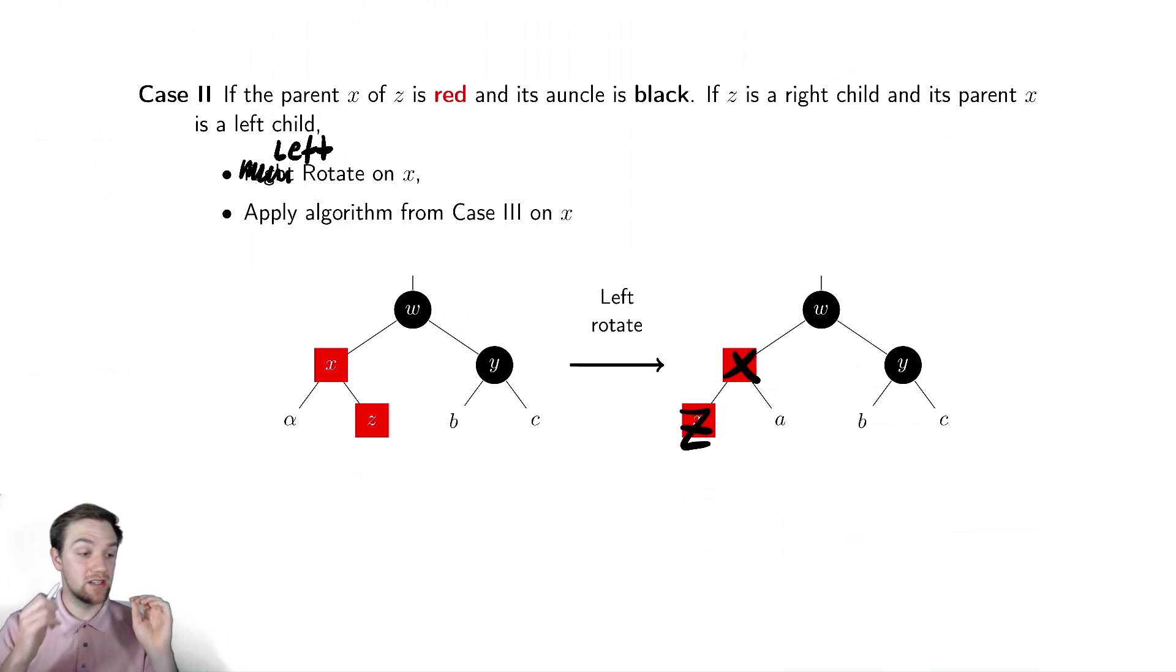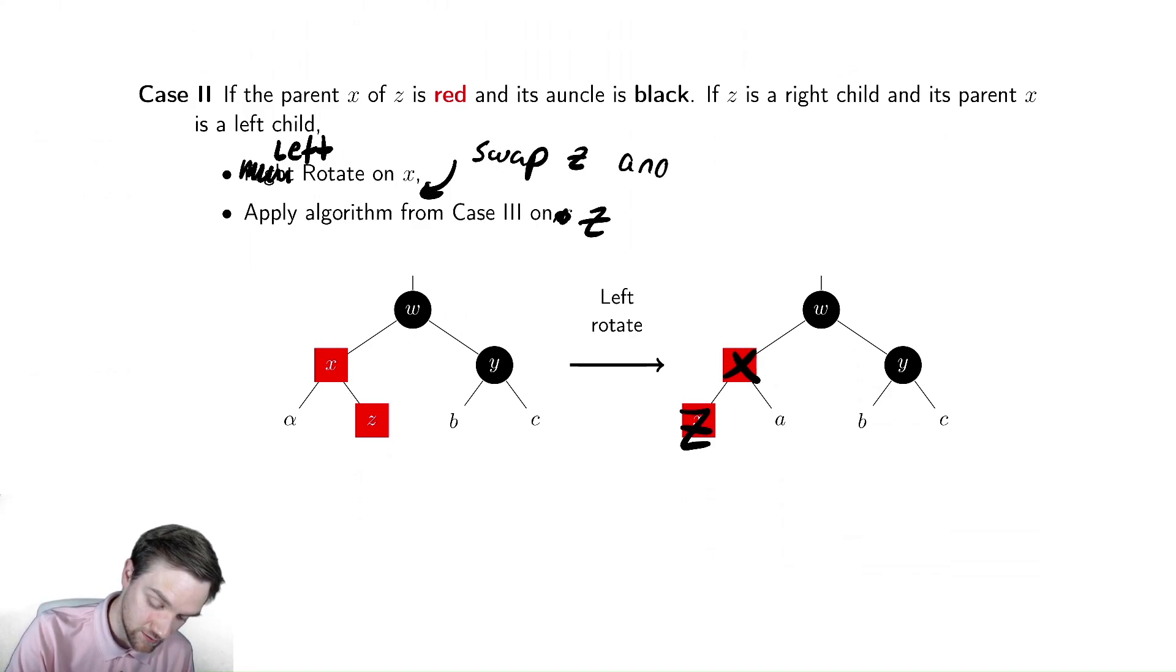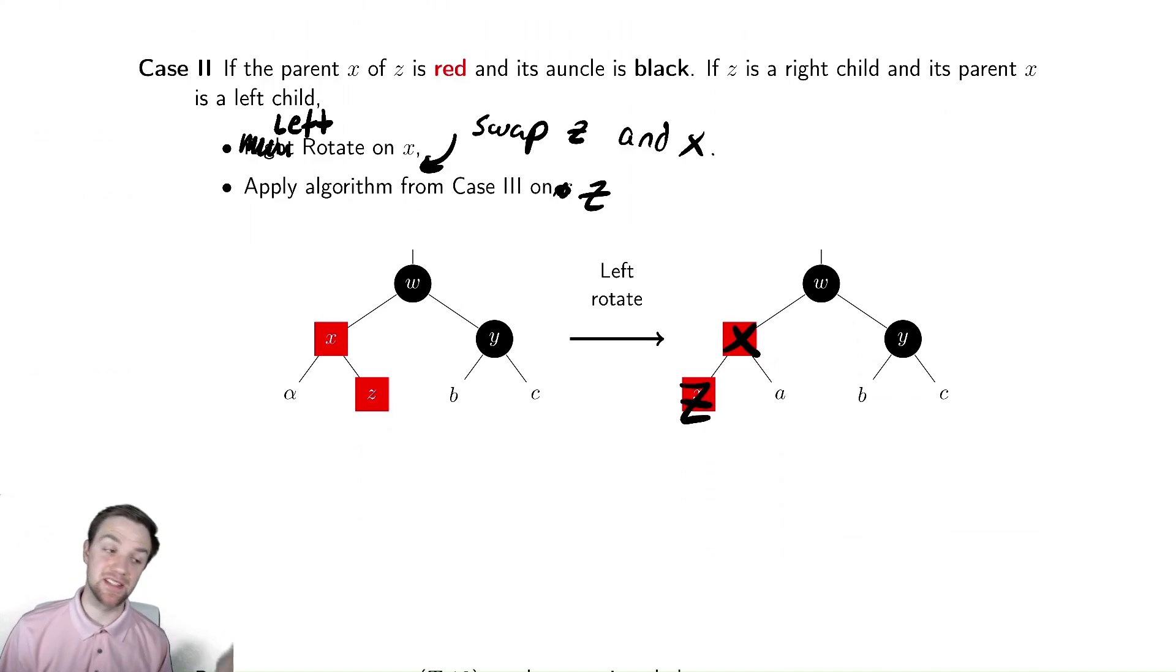So case two degenerates into case three after one rotation, then we're going to apply case three on what I now called node Z. So maybe if we wanted to, we can update this and say Z there, and somewhere in here we say swap Z and X. So that's actually a more programmatic way of doing it. And that way we can keep Z to mean the thing we need to fix.